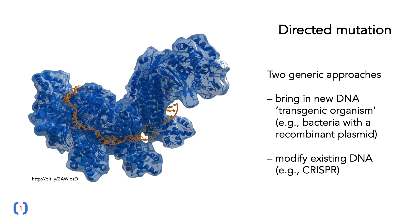In contrast, we can now do directed mutation, and there are a number of ways to do this. The two generic approaches are: first, to bring in new DNA from another organism, creating a transgenic organism — for example, taking a recombinant plasmid containing a gene from a human and putting it into a bacterium. The second approach is to modify existing DNA using a technology called CRISPR or CRISPR-Cas.